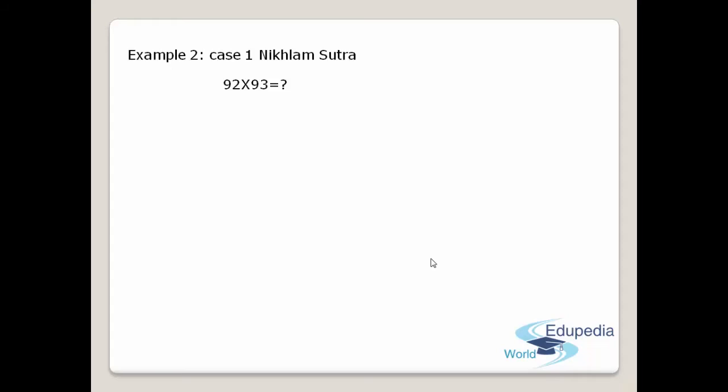I am going to show you how we can do multiplication with the application of Nikhilam Sutra, that is Case Number One. Before starting multiplication for these two numbers, we have to find the base. The base for these two numbers is 100, because 100 is the only number that is very near to 92 and 93. After finding the base, write 92 and 93 below each other, place a horizontal bar and also a vertical bar.